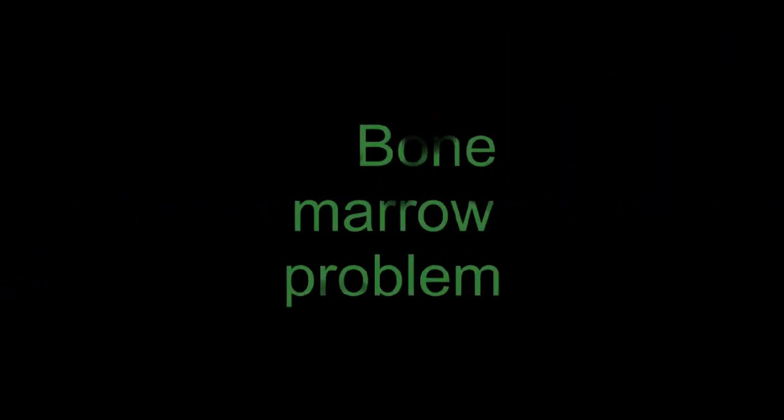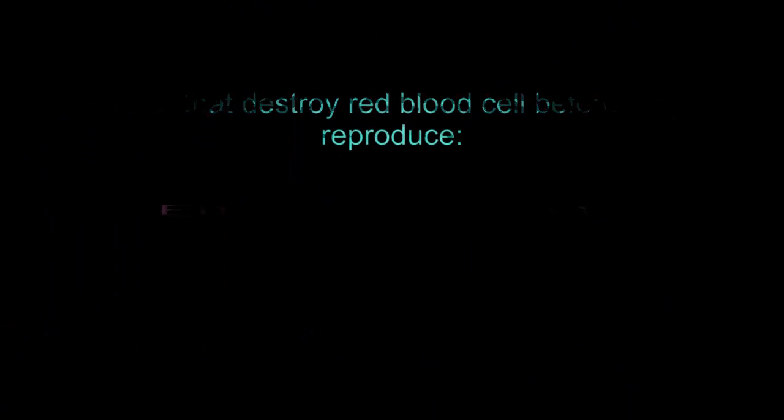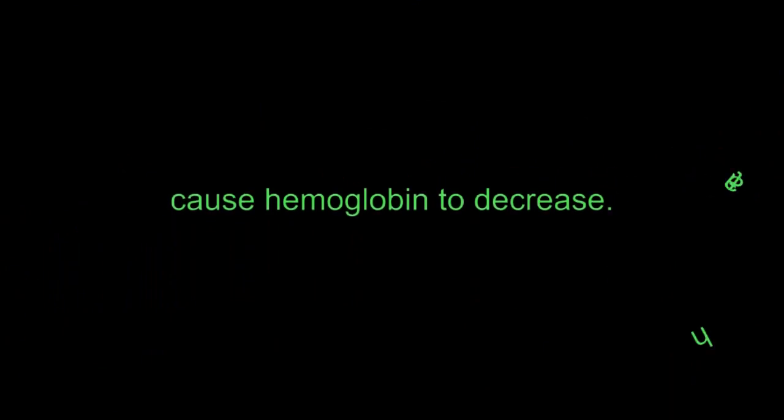Iron deficiency. Lack of vitamin B12 and folate deficiency. Bone marrow problem. Aplastic anemia. Cancer. Cirrhosis. Some medications for HIV and chemotherapy. Hodgkin's lymphoma. Lead poisoning. Kidney disease. Multiple myeloma. Leukemia. Myelodysplastic syndrome. Diseases that destroy red blood cells before they can reproduce. Enlarged spleen. Sickle cell anemia. Porphyria. Vasculitis. Thalassemia. Other temporary reasons for decreased hemoglobin levels are severe loss of blood from an accident or surgery and taking medications that cause hemoglobin to decrease.